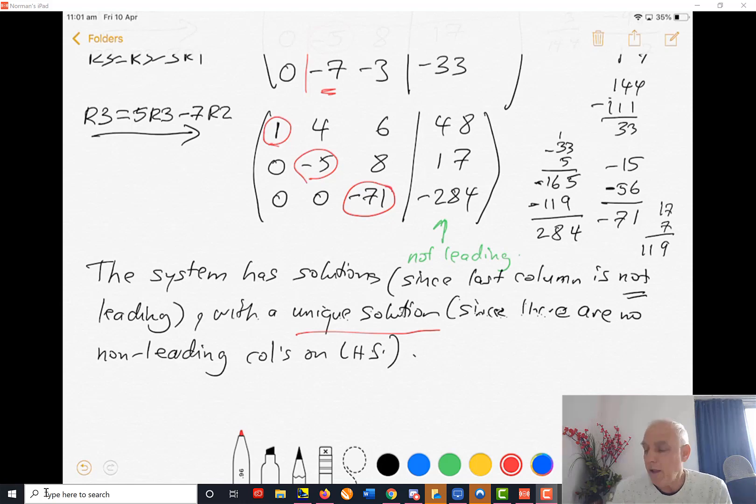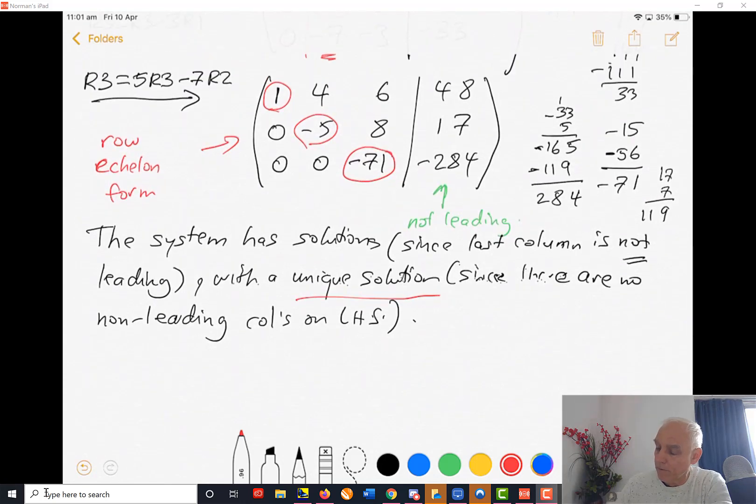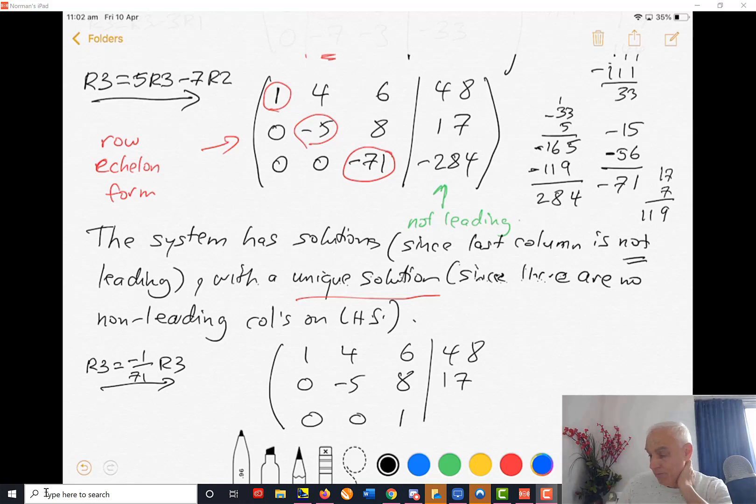We know there's a unique solution. Now we have to find it. We are now going to do the matrix equivalent of back substitution. Before we do that, we want to get that leading entry to be equal to 1. We're moving towards reduced row echelon form. The first thing we're going to do is divide row 3 by -71. When we divide -284 by -71, happily we get just 4.